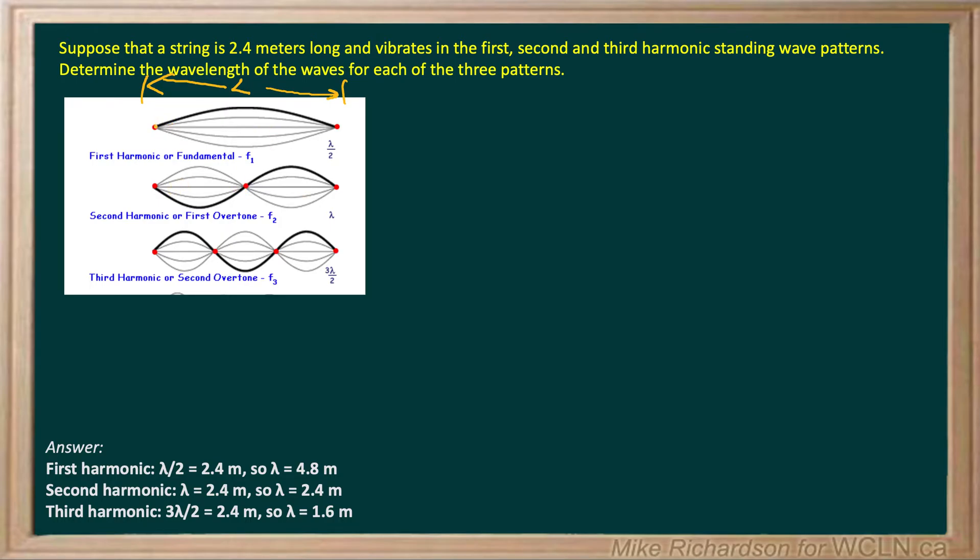And in the first one, you can imagine there's your equilibrium line for your wave right down the center. And really all I'm seeing is one anti-node. And you recall one full wave contains a crest and a trough. So that's half a wave.